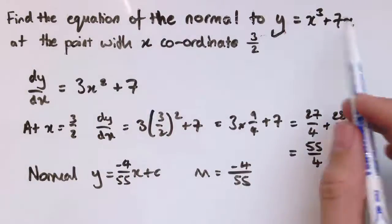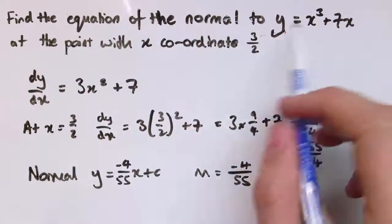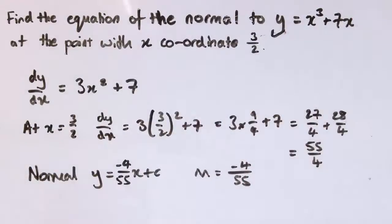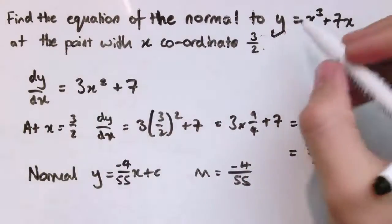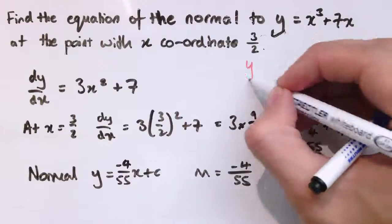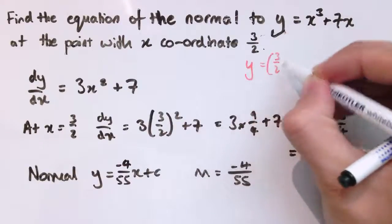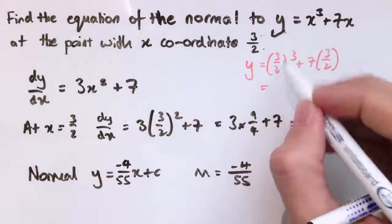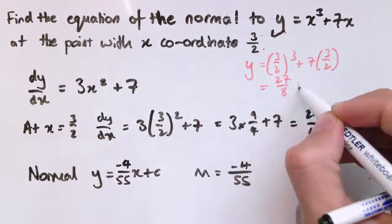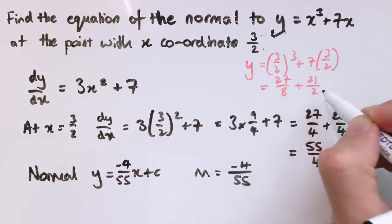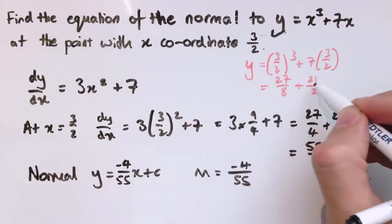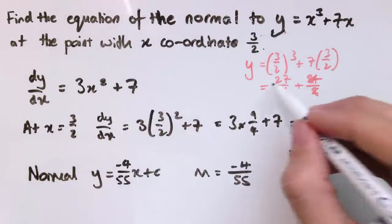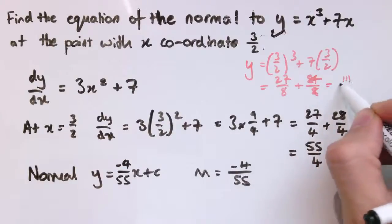So the normal is y equals minus 4 over 55 x plus c. Now we just have to use the fact that we know one point on this curve, which is the one with x coordinate 3 over 2. So we work out its y coordinate from this formula. So we'll have y equals 3 over 2 cubed plus 7 times 3 over 2. So this is 27 over 8 plus 21 over 2, and 21 over 2 is 84 over 8, so 84 plus 27 is 111 over 8.